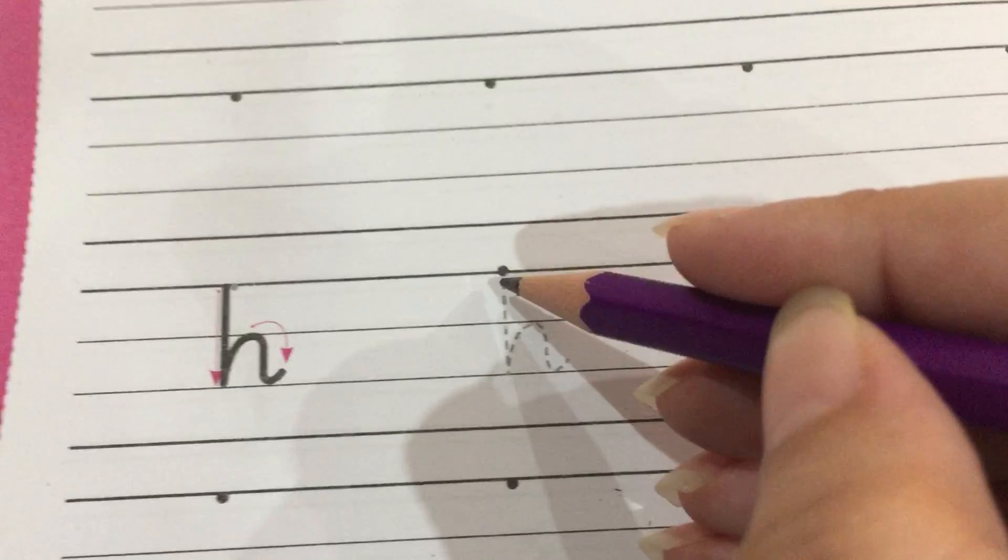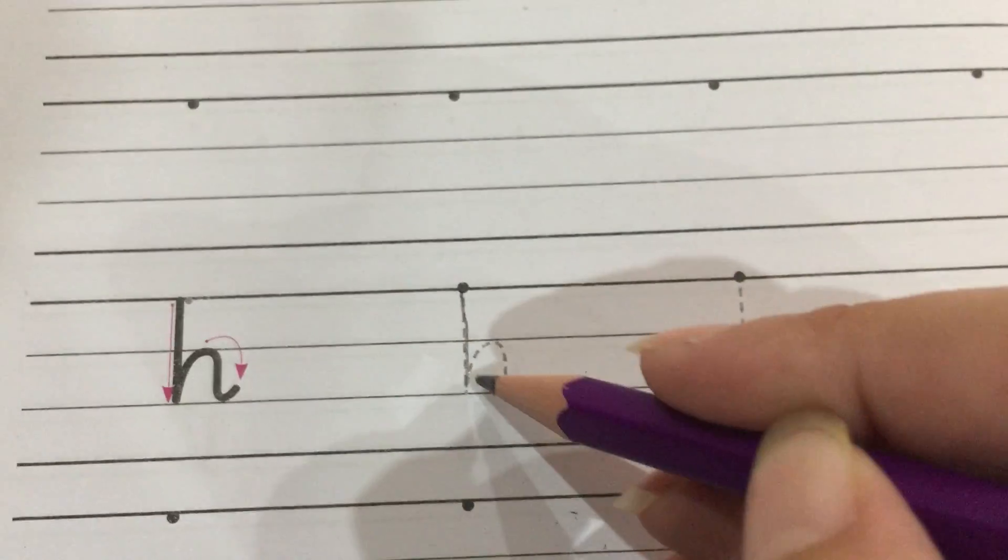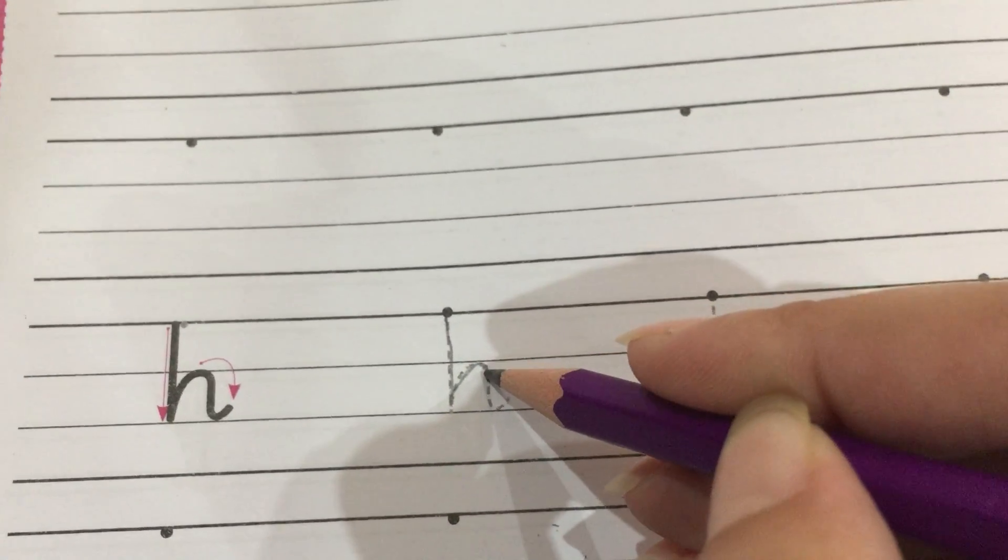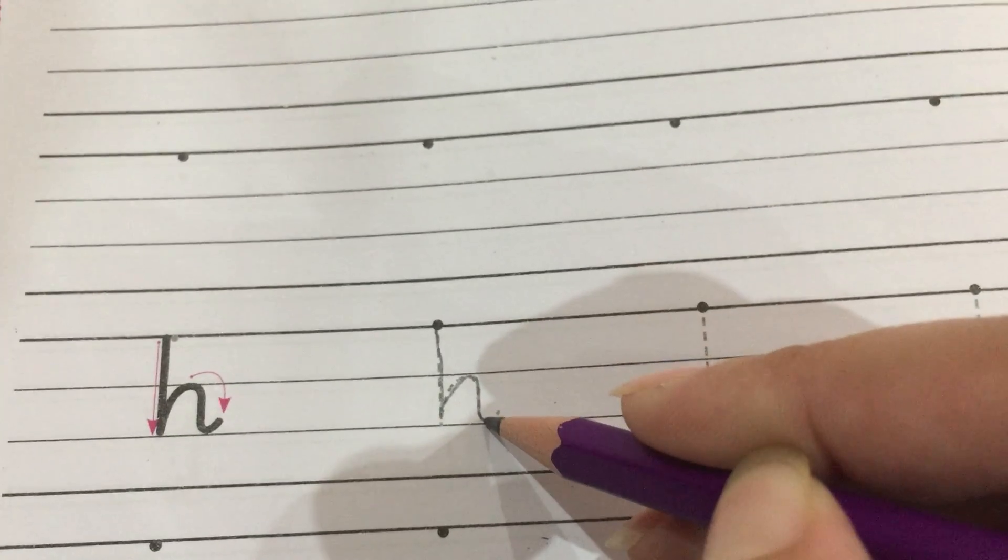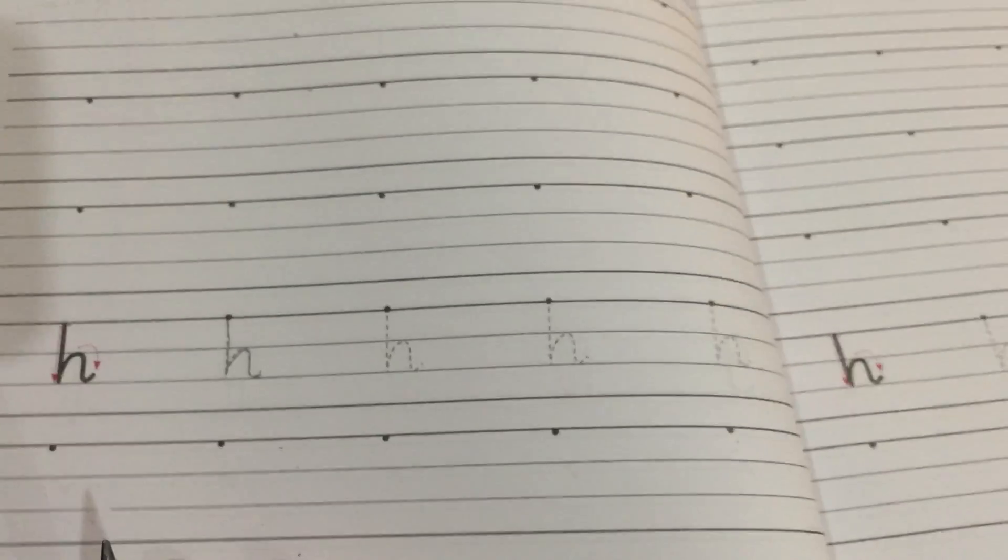Now we write small h. Draw a straight line from top to bottom and do the curve line in the middle. Draw a straight line and again draw a curve line. Now it's your turn.